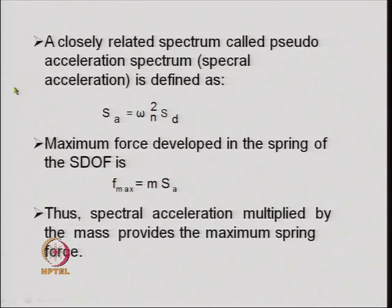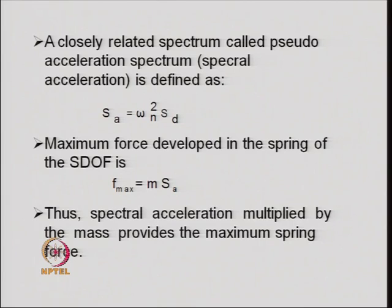The spectral acceleration is the most important quantity in determining the maximum force on a structure during an earthquake. One can plot S_a versus omega_n for a given damping ratio. The three spectra—displacement, velocity, and spectral acceleration—are typically plotted not against omega_n but against the time period T_n equals 2 pi over omega_n.